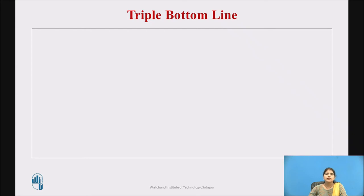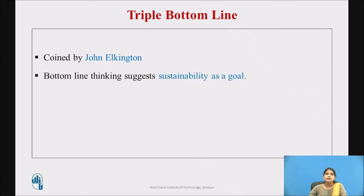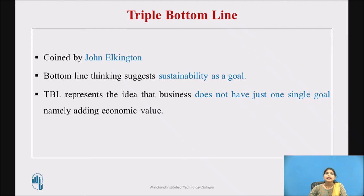Now we will discuss TBL — that is, the triple bottom line. Triple bottom line is a term coined by sustainability thought leader John Elkington. Triple bottom line thinking suggests sustainability as a goal for business ethics. According to Elkington's view, the TBL represents the idea that business does not have just one single goal, namely economic value, but that it has an extended goal which necessitates adding environmental as well as social value.